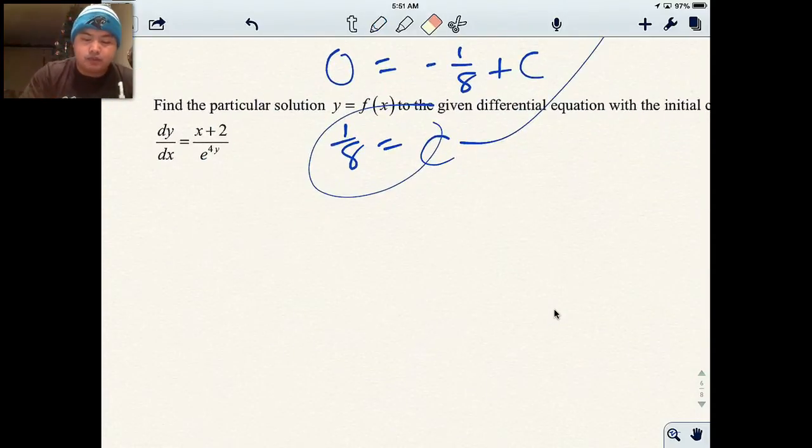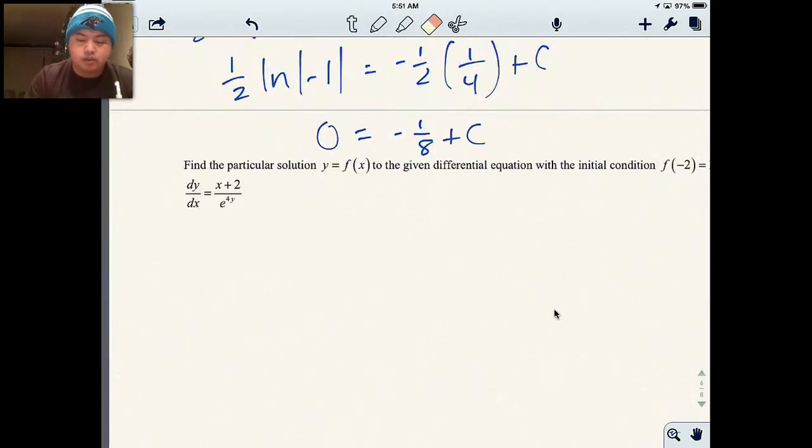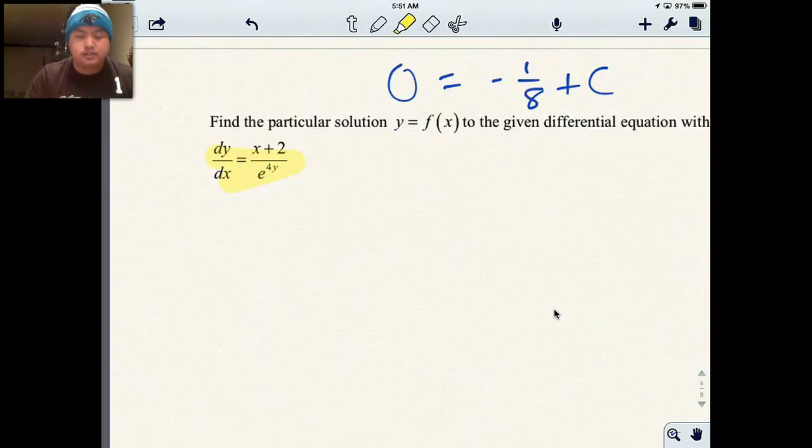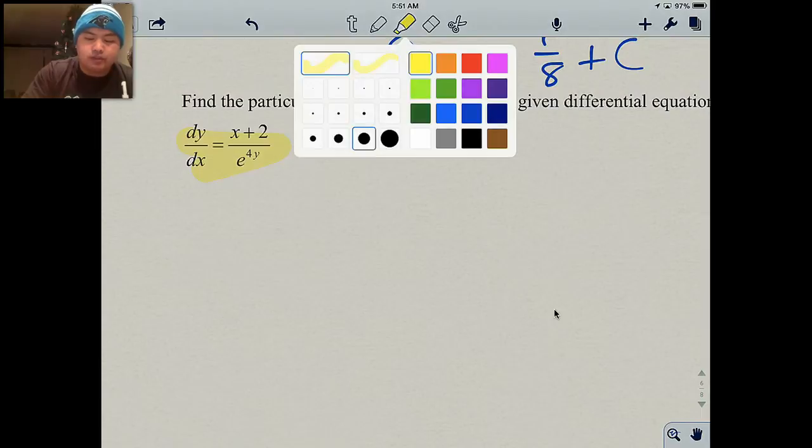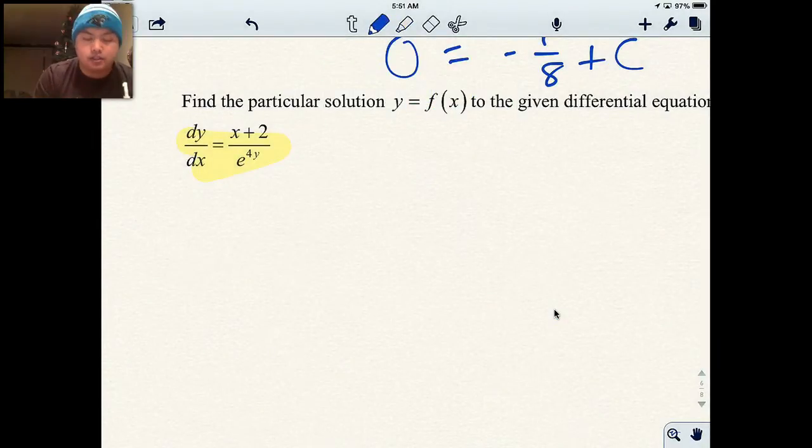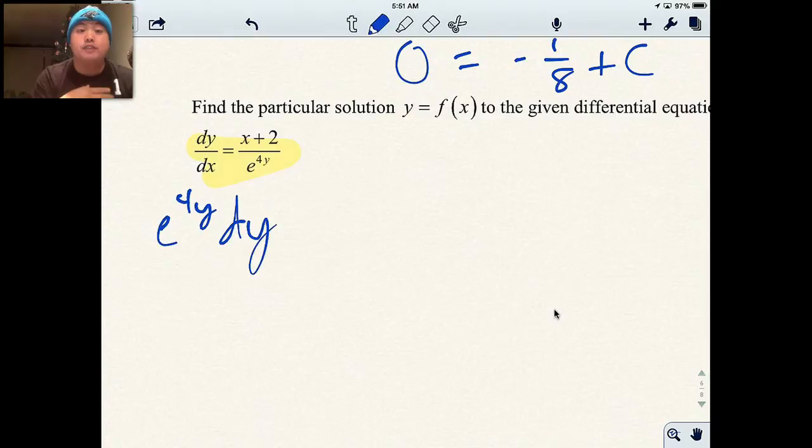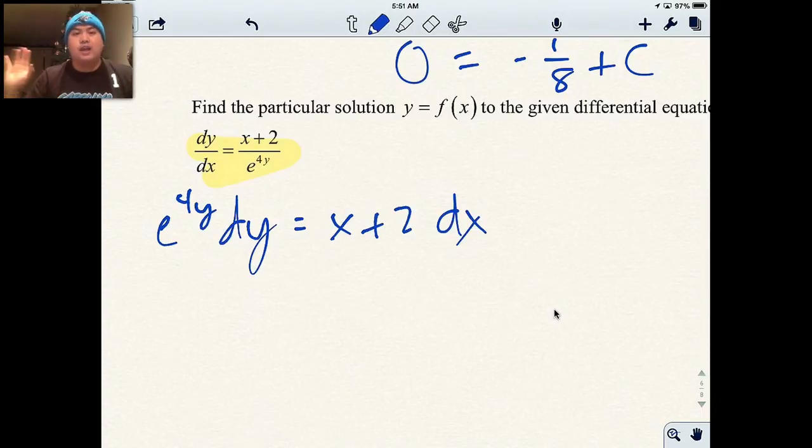And the last example I'm going to give you, very similar, but in this case, we're going to do it with e's. Here is f of negative 2 and it's equal to 1. That's my initial condition. Here's my differential equation. I know it's a differential equation because I have dy over dx. So the very first thing I'm going to do is I'm going to separate the variables. So I'm going to multiply both sides by e to the 4y. So I have x's and y's on different sides.